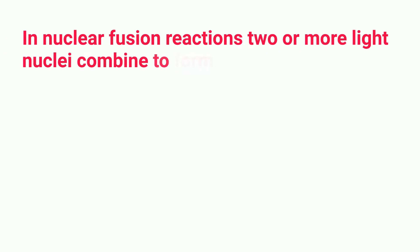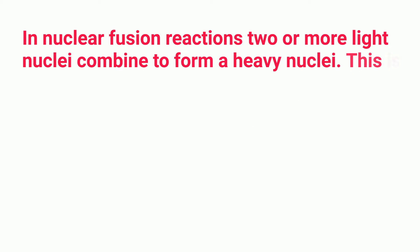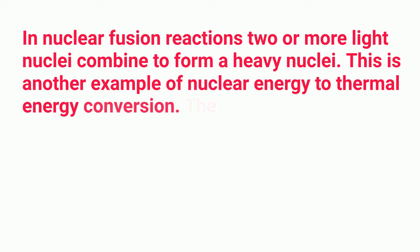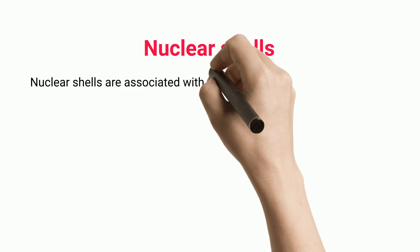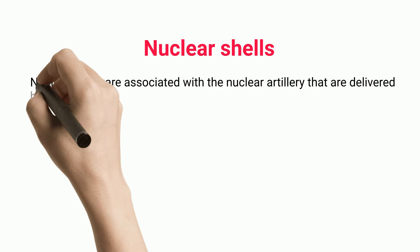In nuclear fusion reactions, two or more light nuclei combine to form a heavy nucleus. This is another example of nuclear energy to thermal energy conversion. The equation of this type of reaction is written below: 1H2 + 1H2 → 2He3 + energy.